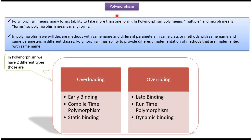In this video tutorial I will cover polymorphism. Polymorphism means many forms — the ability to take more than one form. Poly means multiple and morph means forms.